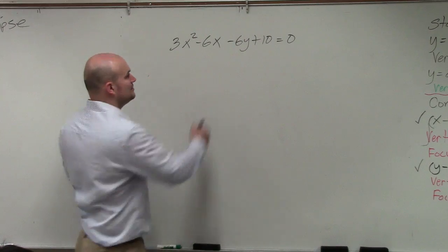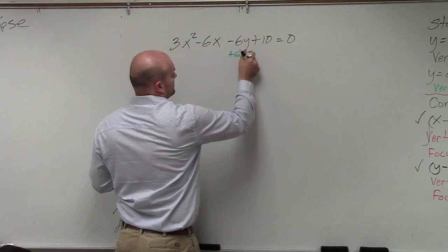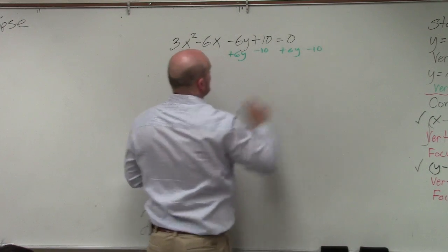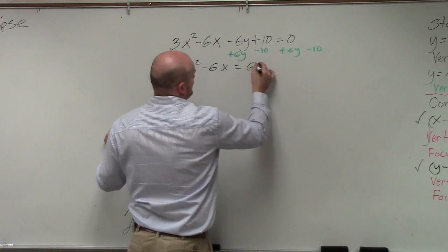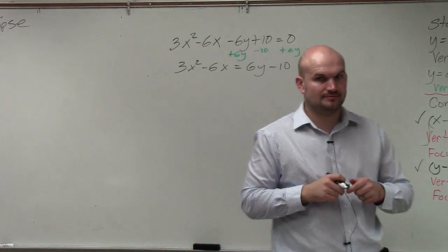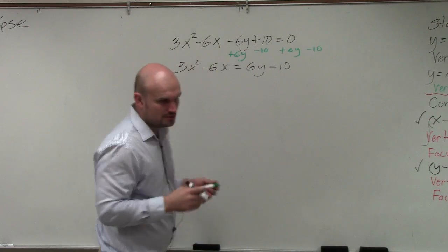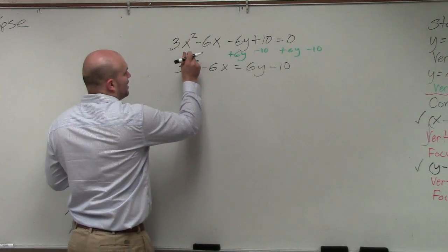So what I'm going to do is get the x's all by themselves. So now I obtain 3x² - 6x = 6y - 10. Does everybody see what I did? Now you guys can see on the left side we have a quadratic.